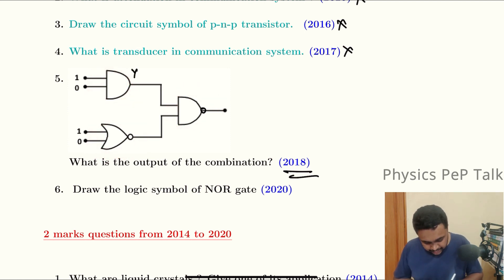AND gate output: Y equals A dot B. 1 dot 0, what is it? It is 0. And this is the NOR gate: Y equals A plus B whole bar. 1 plus 0 is 1, 1 bar is 0. So this is the input. This is the NAND gate output: Y equals A and B whole bar. 0 dot 0 is 0, 0 bar is 1. So this is the required answer for this question.